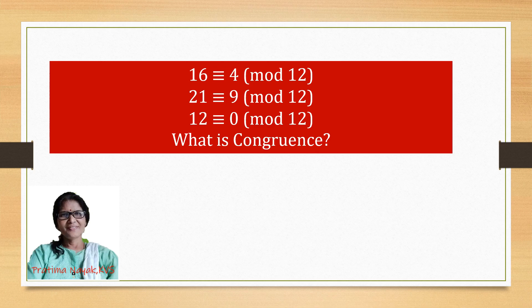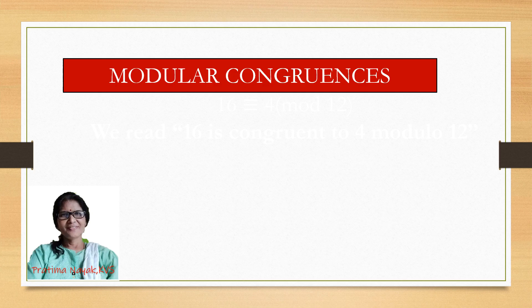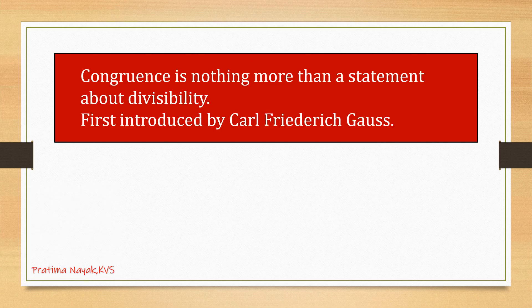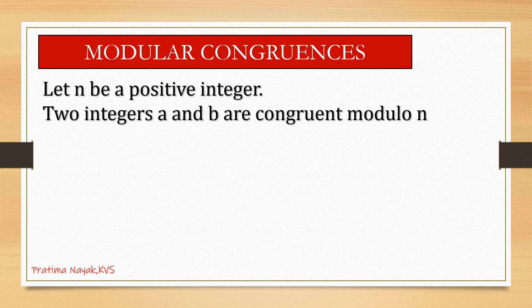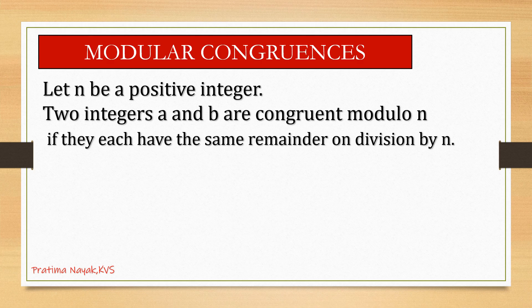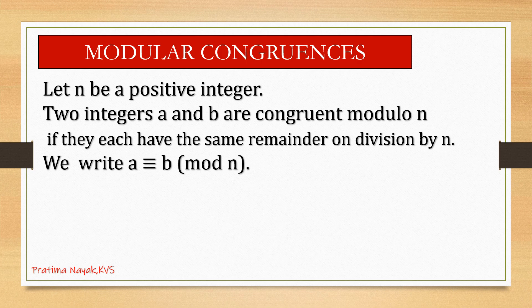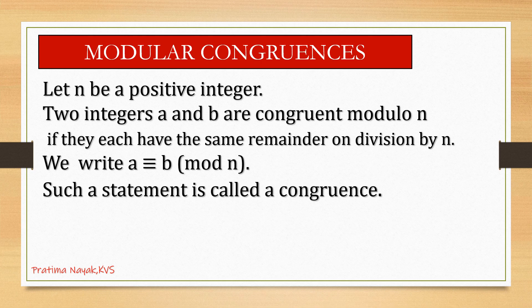So what is this congruence? Let us learn more. Today's video is about modular congruence. Congruence is nothing but more than a statement about divisibility, first introduced by the physicist Carl Friedrich Gauss. Let n be a positive integer. Two integers a and b are congruent modulo n if they each have the same remainder on division by n. We write a ≡ b (mod n). This is the mathematical symbol. Such a statement is called a congruence.